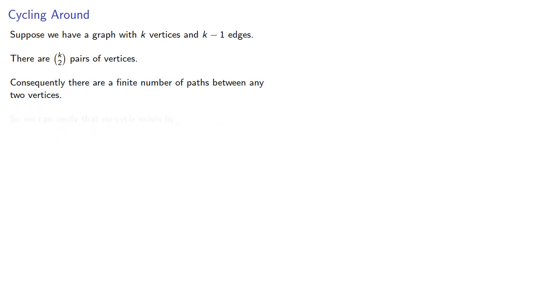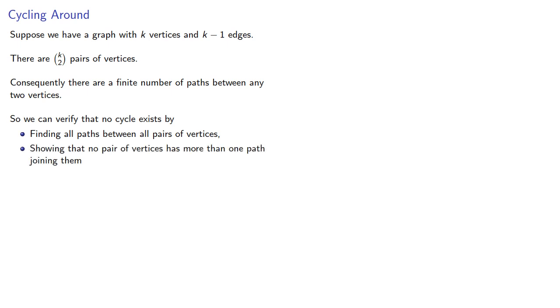So, we can verify that no cycle exists by finding all paths between all pairs of vertices and showing that no pair of vertices has more than one path joining them.